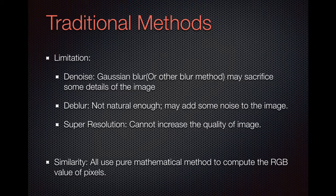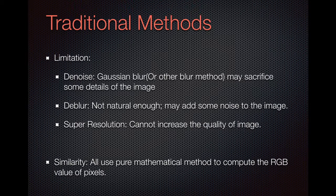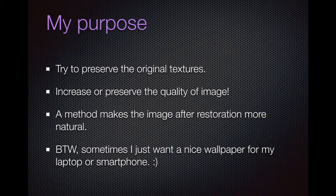Of course, there are some limitations in traditional methods. For the denoising part, the Gaussian blur or other blur methods may sacrifice some details of the images. The deblurring algorithm is not natural enough and may add some noise to the images sometimes. For the super-resolution part, bicubic interpolation cannot increase the quality of the images — it just increases the size. They all use pure mathematical methods to compute the RGB value of pixels. My purpose is to preserve the original textures and increase or preserve the quality of the images, and my method makes the images more natural after restoration.